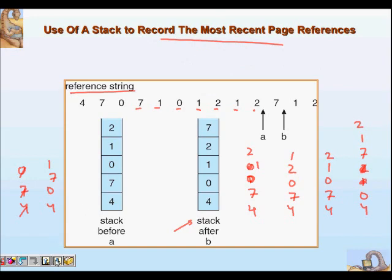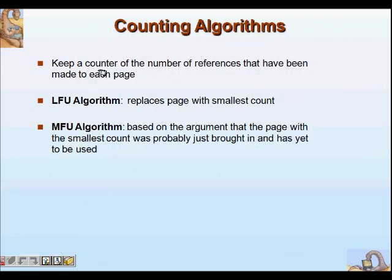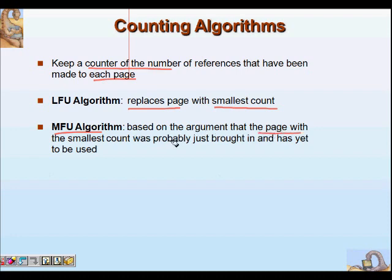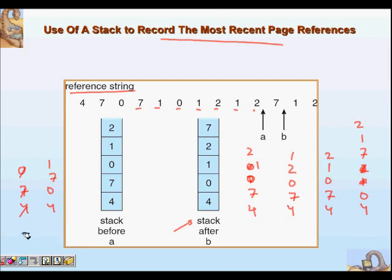There are also counting algorithms. The LFU (Least Frequently Used) algorithm keeps a counter for the number of references made to each page and replaces the page with the smallest count — the idea being that a page not used much will not be needed. MFU (Most Frequently Used) is based on the argument that the page with the smallest count was probably just brought in and has yet to be used. The most important algorithm is LRU, which can be implemented using either a counter-based approach or a stack. I hope you understand it — thanks a lot.